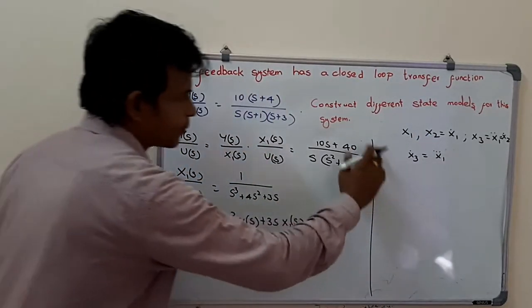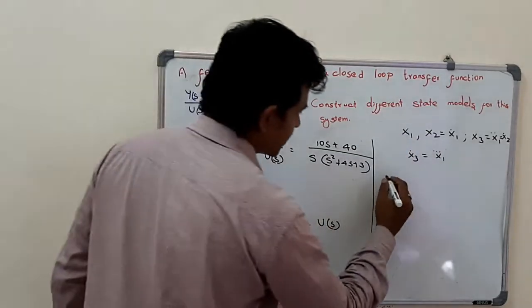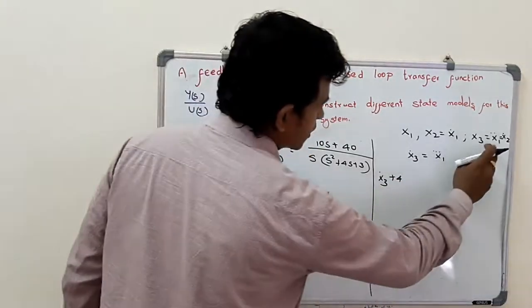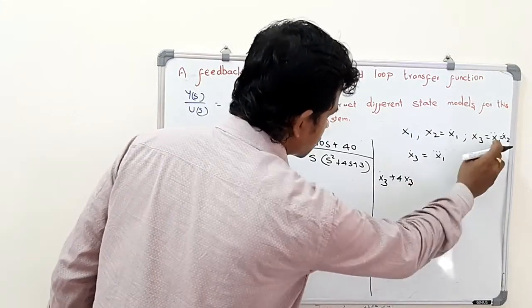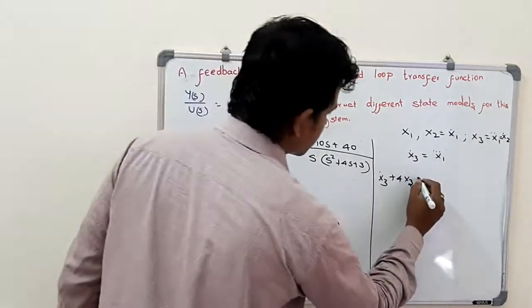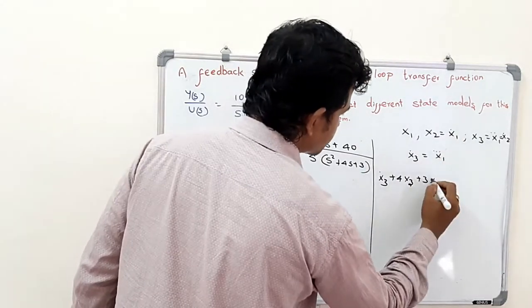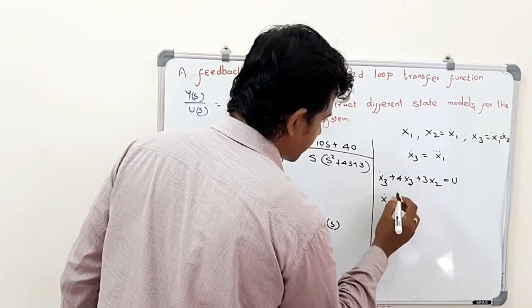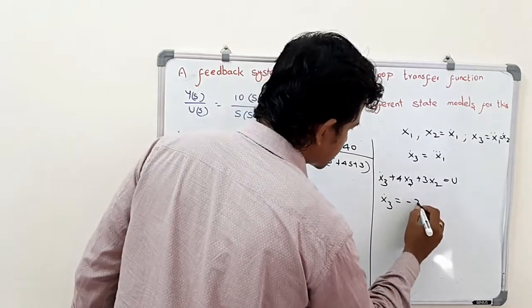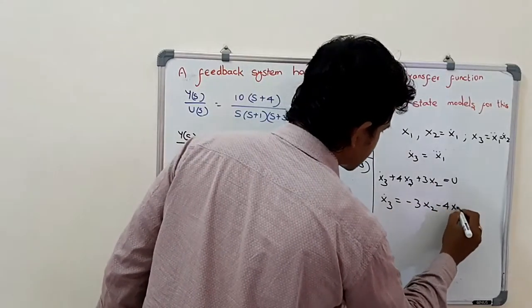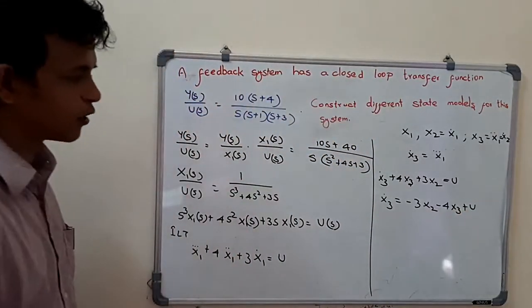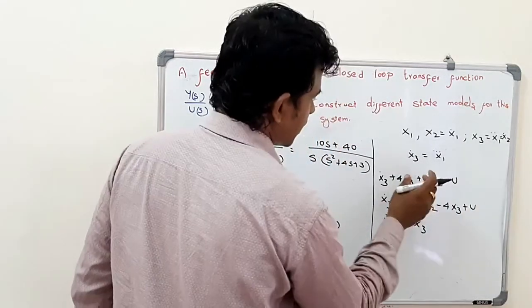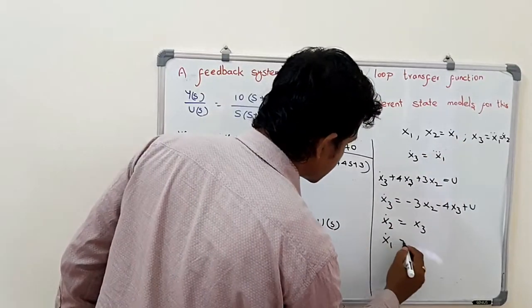Substituting these conditions into the equation: x1 triple dot becomes x3 dot, x1 double dot becomes x3, and x1 dot becomes x2. So: x3 dot + 4 times x3 + 3 times x2 = u. Keeping x3 dot on the left-hand side: x3 dot = minus 3x2 minus 4x3 plus u. Also, x2 dot = x3 and x1 dot = x2.